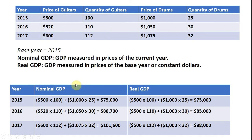I show the calculations down here. Let me first go through nominal GDP. In 2015, nominal GDP is going to be the price of guitars multiplied by the number of guitars produced — so we get the total expenditures on guitars — and then we add to that the total expenditures on drums: $1,000 times 25. So nominal GDP in 2015 is $75,000.